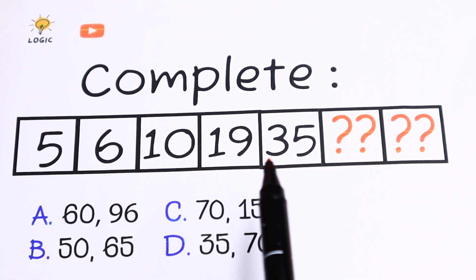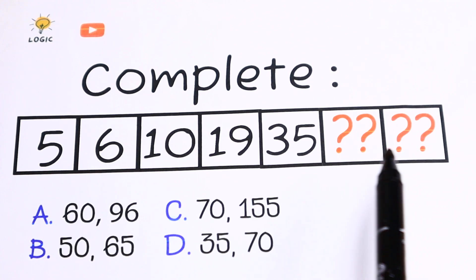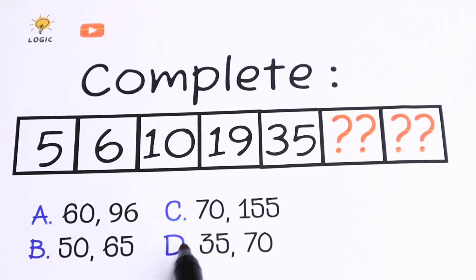We have 5, 6, 10, 19, 35 and we need to find the last two numbers. And right here we have an option A, B, C and D.